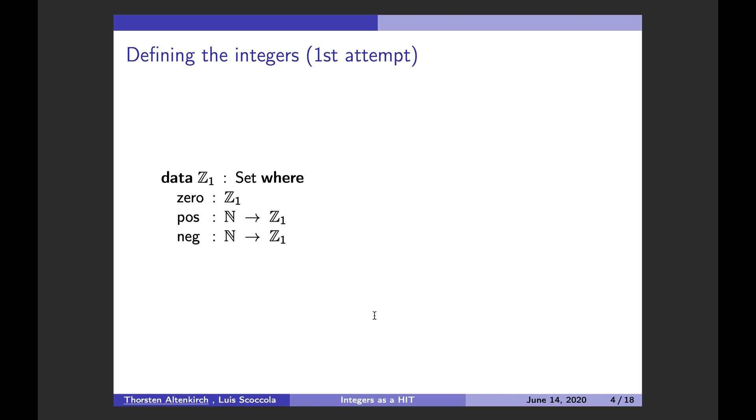So the first way to define the integers is, like, very naive and maybe the first thing you would think of. We say an integer is either 0 or a positive or a negative, and positive and negative integers are given by natural numbers. So pos of 0 is plus 1, and neg of 0 is minus 1. There are some variations of the scheme. You can have only two cases or use a boolean for the sign or whatever. It's all the same. So this is a very, very simple representation of the integers.